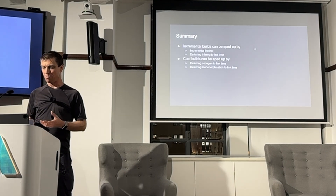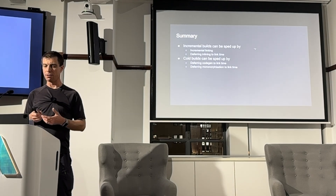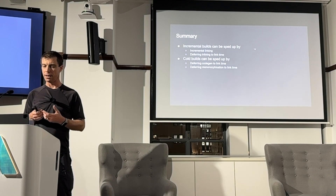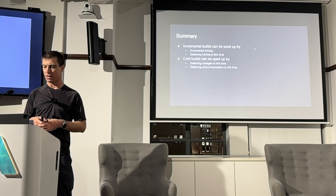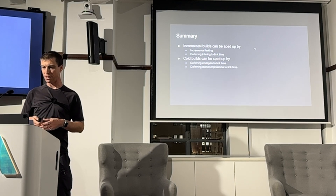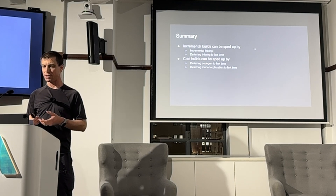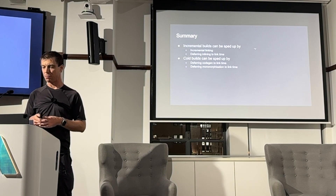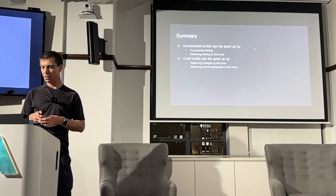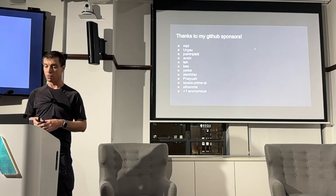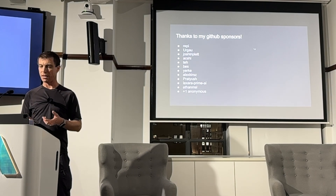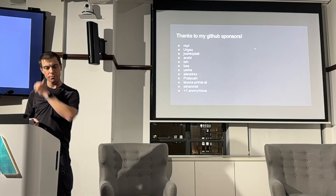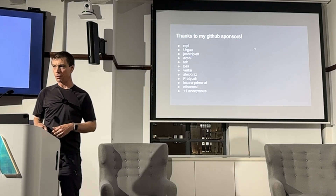In summary, incremental builds can be sped up by incremental linking and deferring inlining to link time. Cold builds can be sped up by deferring code gen and monomorphization to link time. I think having a linker written in Rust has great potential for speeding up Rust compile times. I'd like to finish by saying a big thank you to all of my GitHub sponsors for making it possible for me to work on this full time. Thank you — do you have any questions?